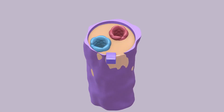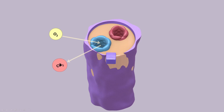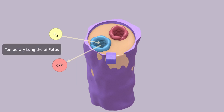Since the lungs of the fetus are non-functional because there is no direct connection with the external environment, placenta helps in the exchange of gases. The fetus needs oxygen for metabolism, so oxygen passes from the maternal blood to the fetal blood across the placental membrane. Similarly, carbon dioxide, the waste product of metabolism, is also excreted out across the placental membrane. By providing this remarkable capability for gaseous exchange, the placenta is acting as a temporary lung of the fetus.